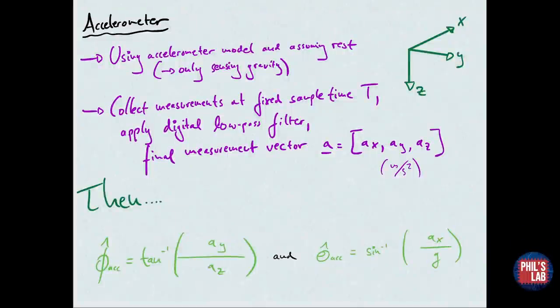Starting with the accelerometer, we use the accelerometer model from the previous video and assume our system is not accelerating, that is, we are only sensing gravity along each axis. We collect the measurements at a fixed sample time T in seconds, and we apply a digital low-pass filter to remove high-frequency noise. Our final measurement vector is given by A, which contains AX, AY, and AZ in meters per second squared.